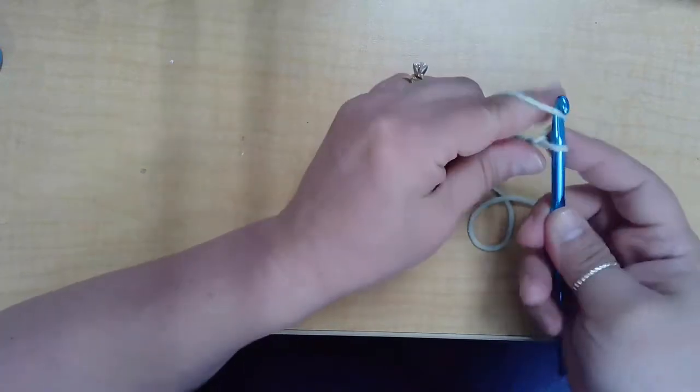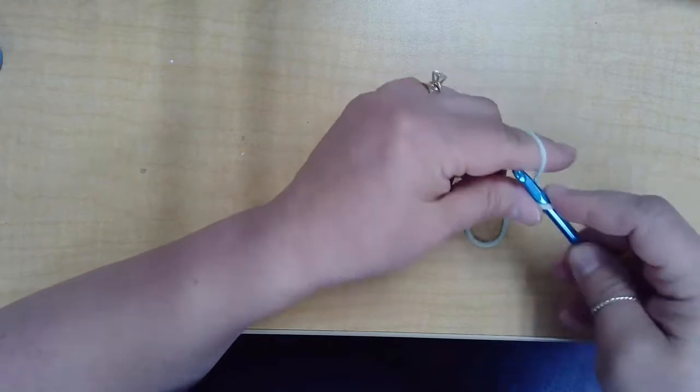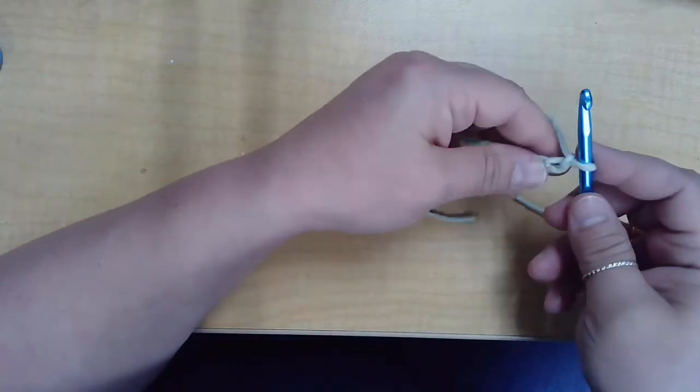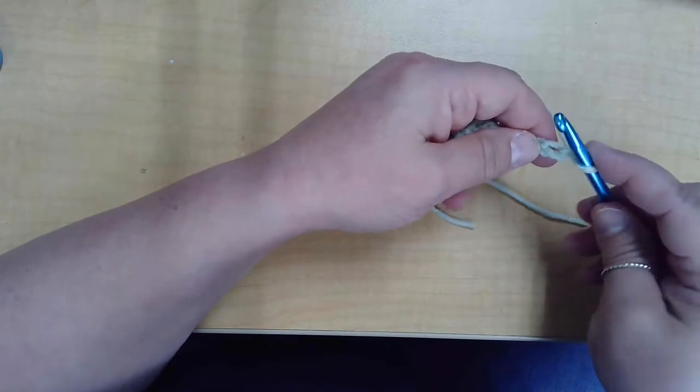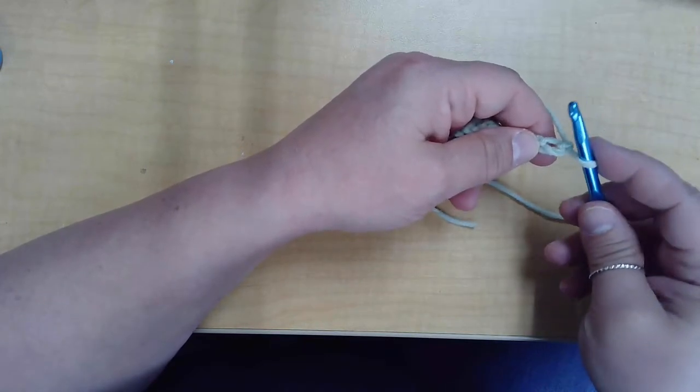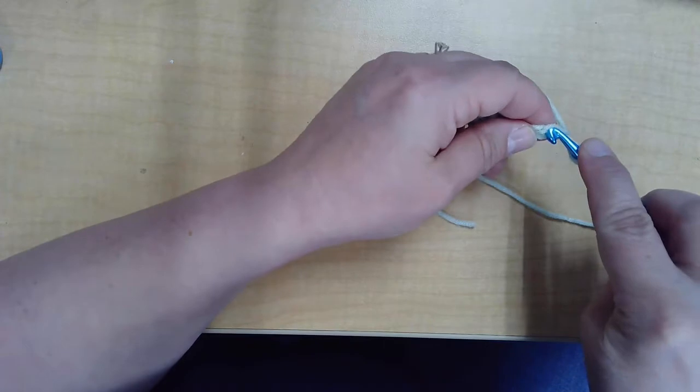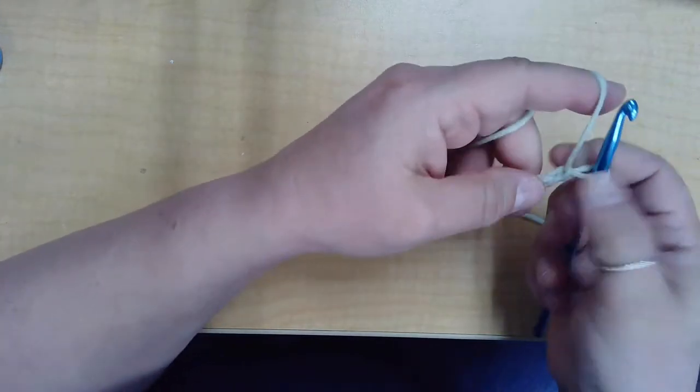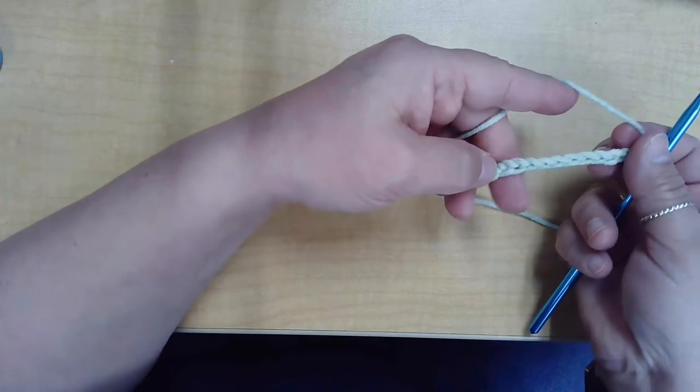And you're just yarning over and pulling through the loop on your hook so that you create, it looks kind of like a braided chain when you're done. Sometimes it can get twisted around in the back. And then I can show you here when it's facing the right way, it looks like a braid.